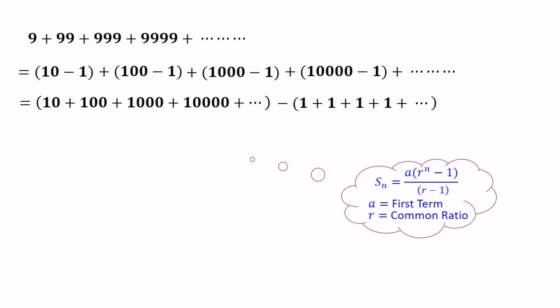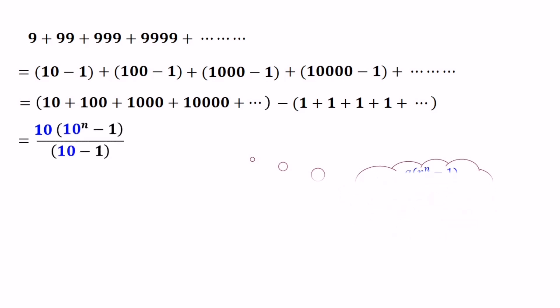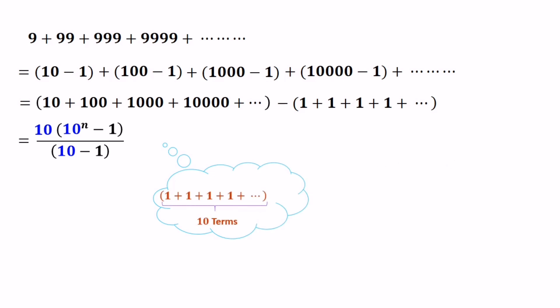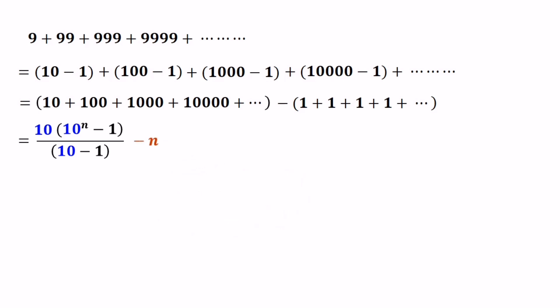Using this equation, we can find the value of 10 plus 100 plus 1000 plus 10,000 and so on. In this case, a equals 10 and r equals 10. Also, we know that 1 plus 1 plus 1 repeated n times equals n. Finally, we can write the answer as 10 times (10 to the power of n minus 1) over 9, minus n.